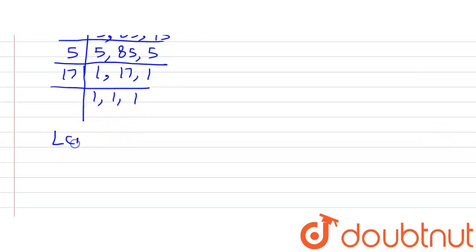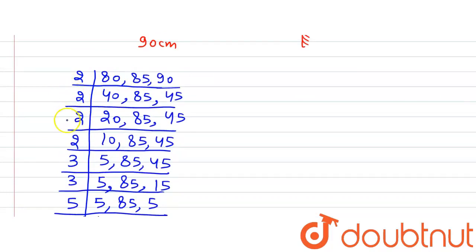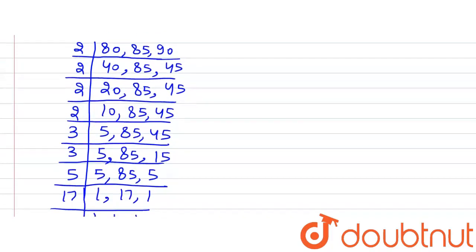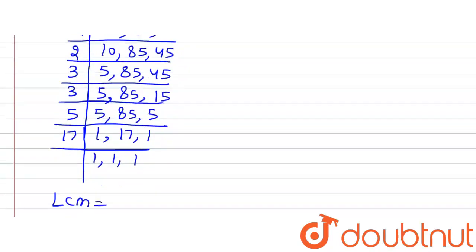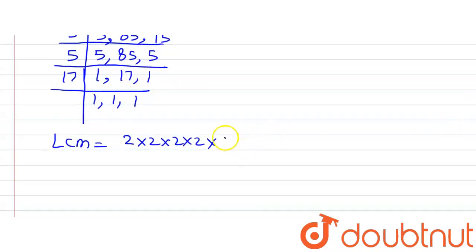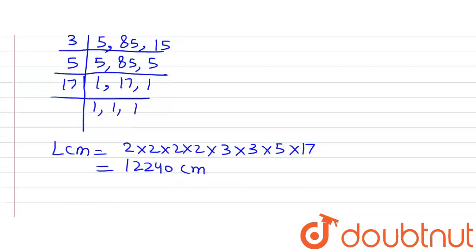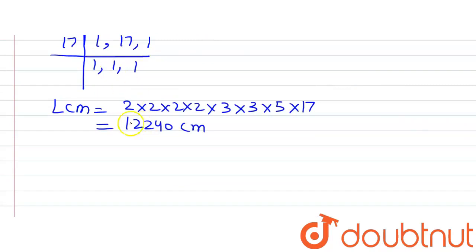So the LCM is the product of all these prime factors: 2 appears 4 times, 3 appears 2 times, and 5 and 17 each appear once. So LCM = 2 × 2 × 2 × 2 × 3 × 3 × 5 × 17. Solving this product we get 12,240 cm. So the minimum distance after which they will all meet is 12,240 cm.